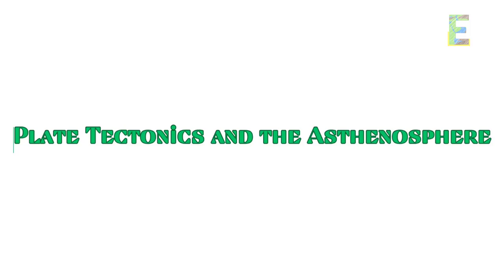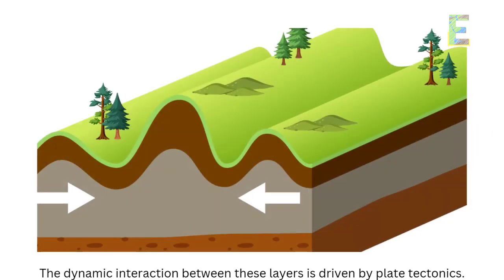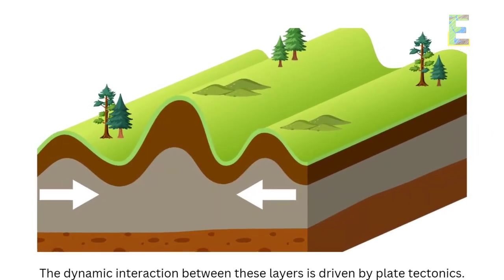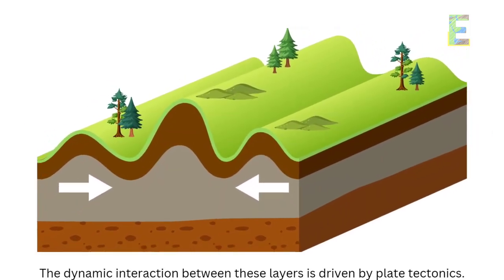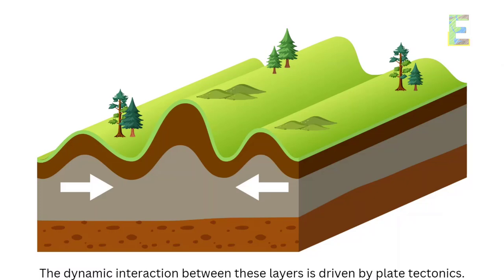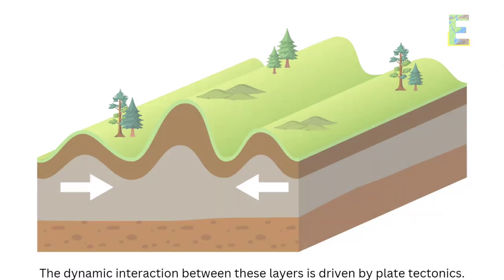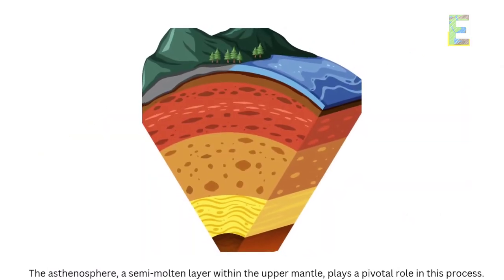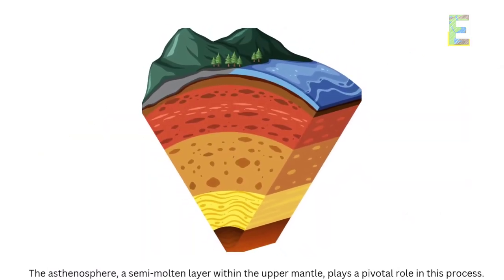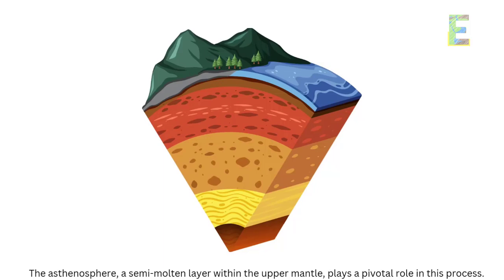Plate tectonics and the asthenosphere: the dynamic interaction between these layers is driven by plate tectonics. The asthenosphere, a semi-molten layer within the upper mantle, plays a pivotal role in this process.